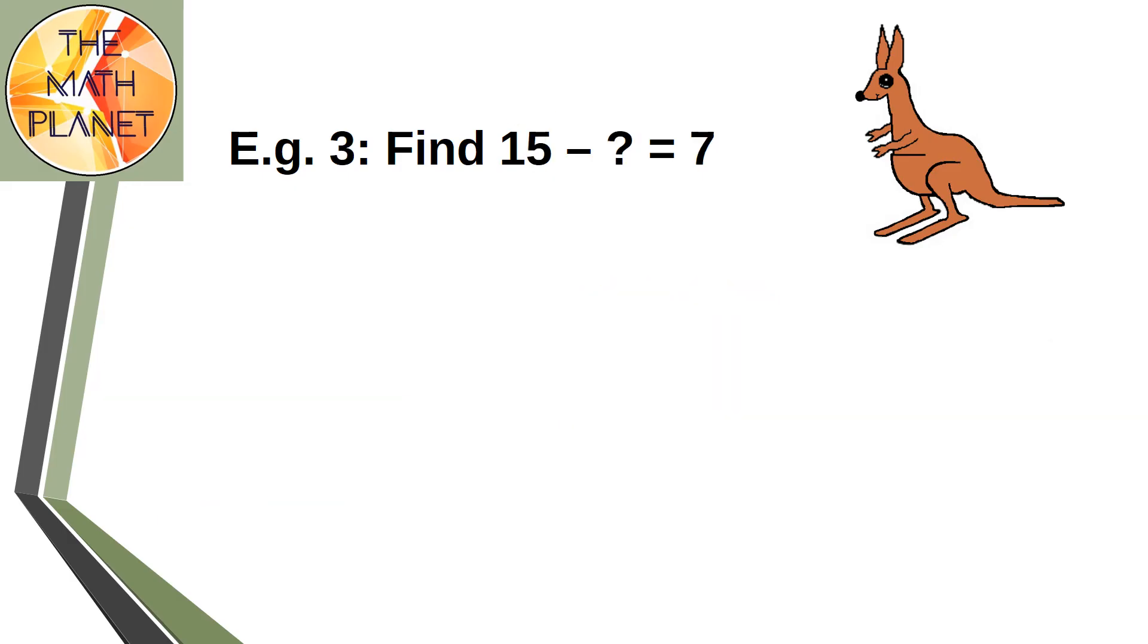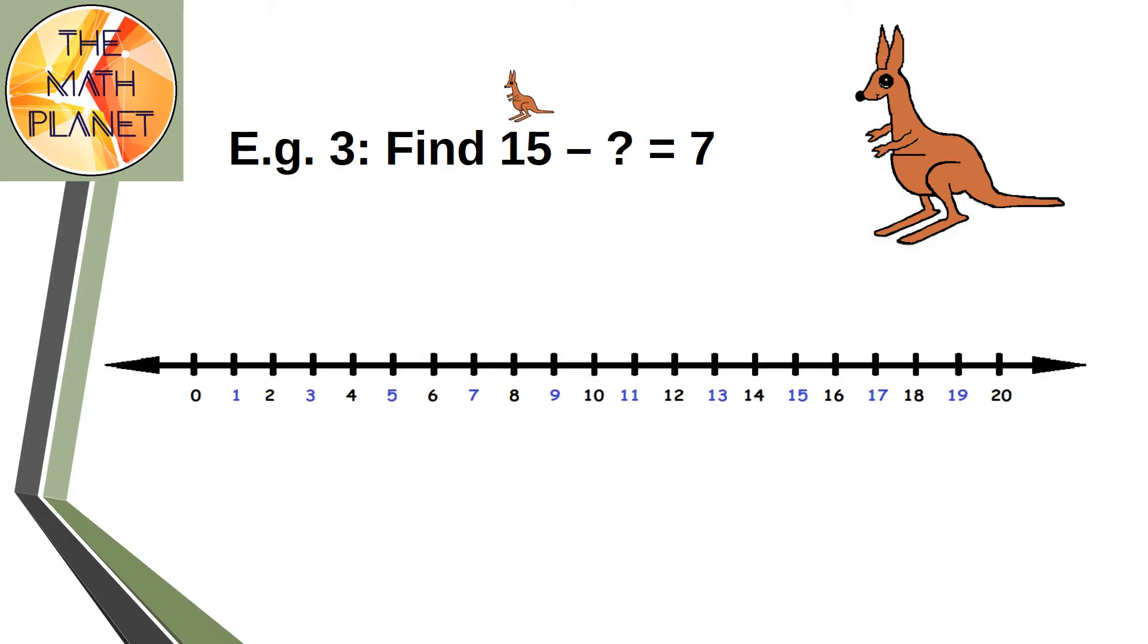Now, can you help me solve this last example? 15 minus what equals 7. In this example, I'll start at 15, but I don't know how many steps I need to jump. Yet, I know the destination point is 7. So my start point is 15, my end point is 7.